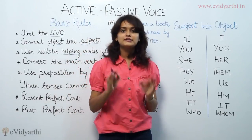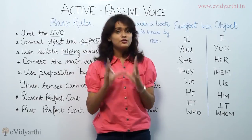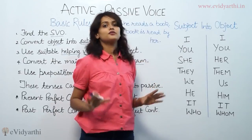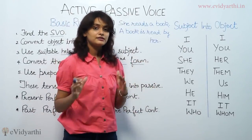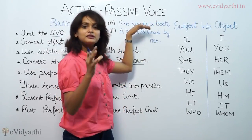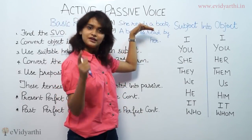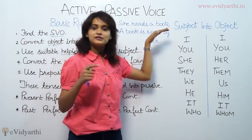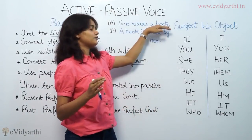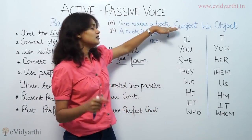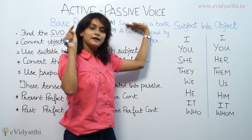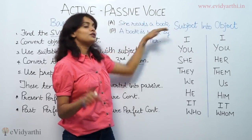What is the main verb? The main verb is a kind of action. So we have to identify the main verb. In this sentence, the main verb is 'reads' — because 'reads' is the action here. She reads a book. Now the last thing is the object. The object is always put at the end of the sentence. So what is the object? 'Book' is the object.